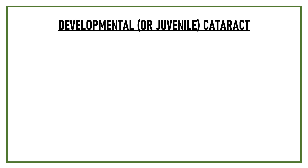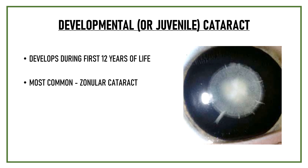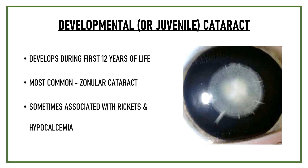Developmental or juvenile cataract develops during the first 12 years of life. The most commonly encountered developmental cataract is a zonular cataract. It is sometimes associated with rickets and hypocalcemia.